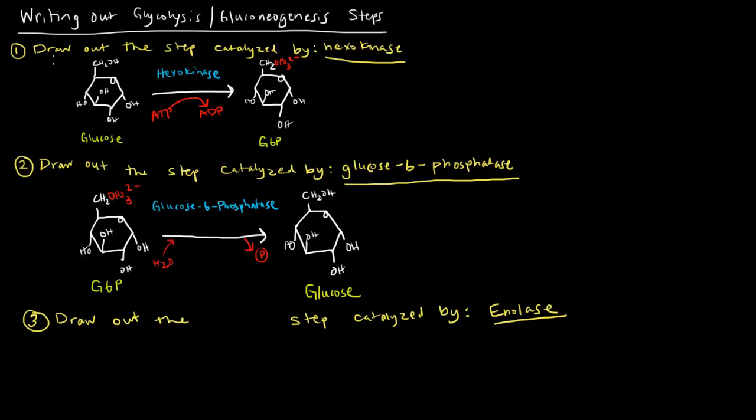If you're asked to draw out the step catalyzed by hexokinase, I know that hexokinase is the first reaction of glycolysis, where we take glucose to glucose 6-phosphate and invest an ATP. This enzyme only exists in glycolysis. It does not have anything to do with gluconeogenesis, so if I'm told to draw out the step catalyzed by hexokinase, I know it's this, because this step is irreversible, and this is the only thing that hexokinase will catalyze.